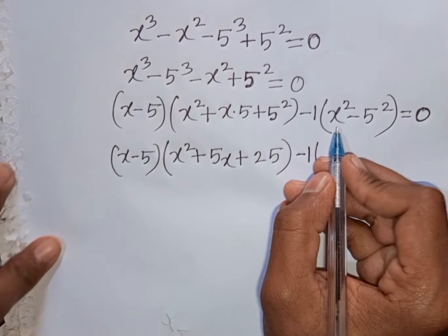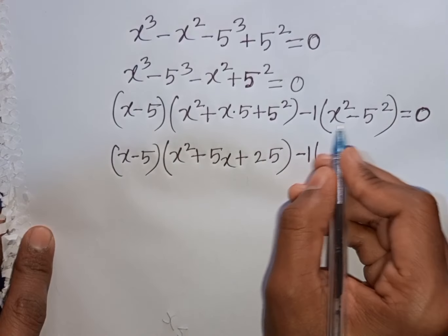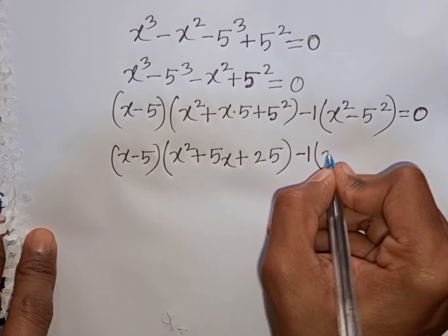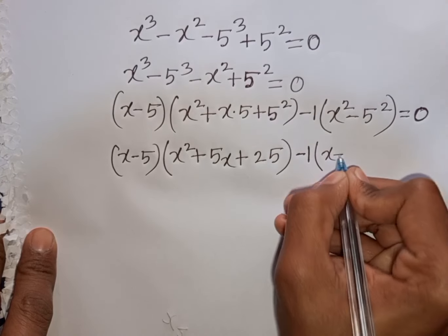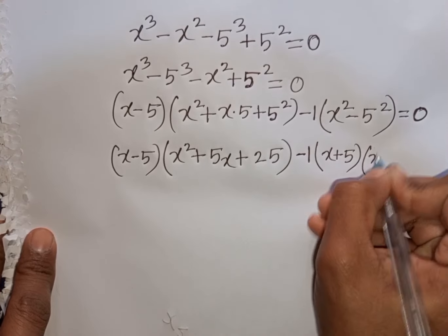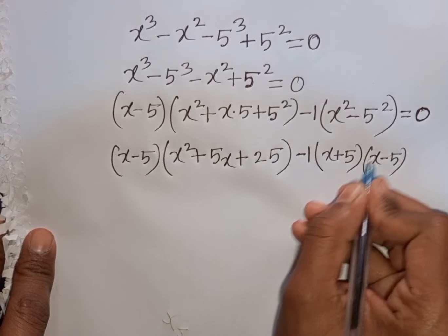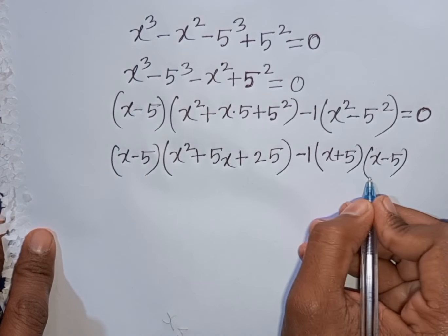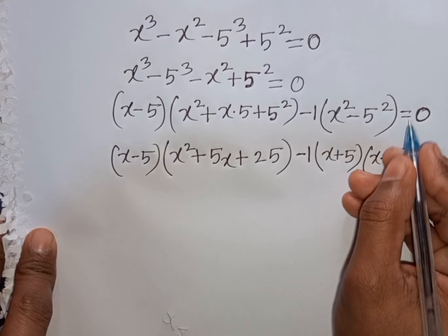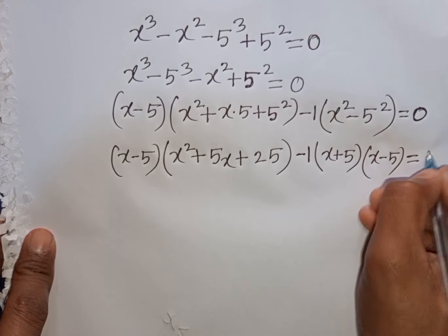Now I can apply the formula of a² - b², again with a = x and b = 5. So according to the formula: (x + 5)(x - 5). That means (a + b)(a - b) — this is the formula of a² - b². Then equals 0.